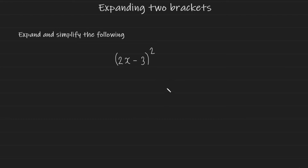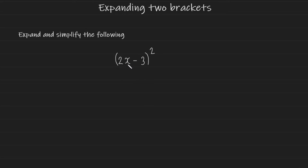Let's take a look at this example here. We have 2x minus 3 in brackets squared. Now many students are going to make the mistake of thinking they can take this square and apply it to each term — so like 2x squared and 3 squared. This is incorrect. Do not do this.